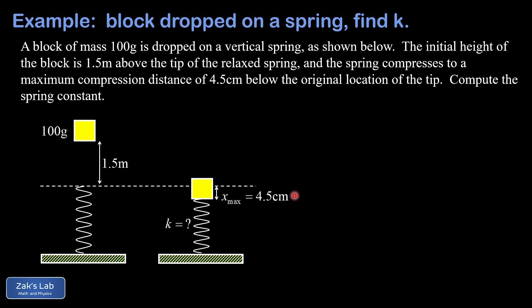Then in the final state of the system, the block has compressed that spring to a maximum compression value of four and a half centimeters. And we should be able to use this to find the spring constant k. Of course, this is an energy conservation problem. So we're going to start by just writing down E initial equals E final.